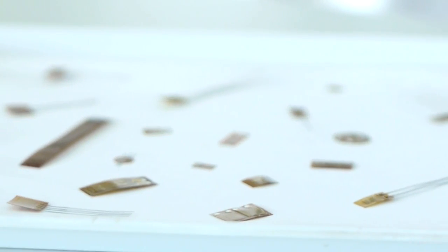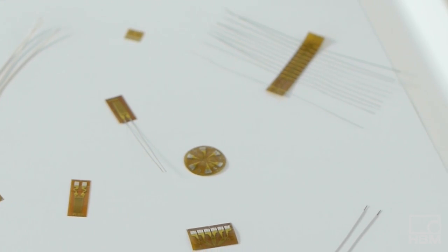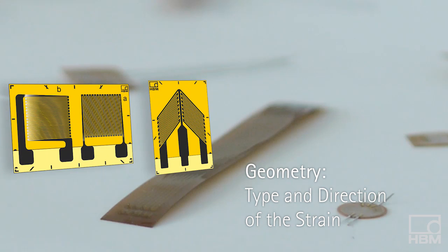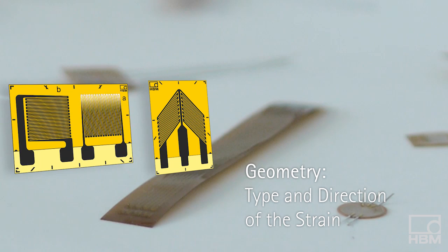By answering these questions, you can identify the optimal strain gauge. The geometry of the strain gauge is decided by the type and direction of the strain which have to be determined.